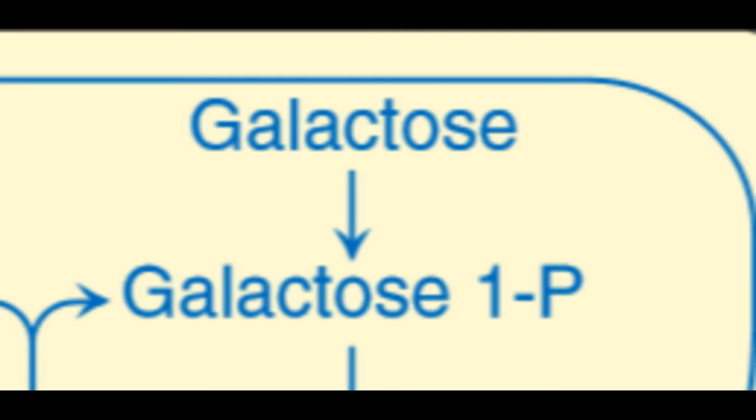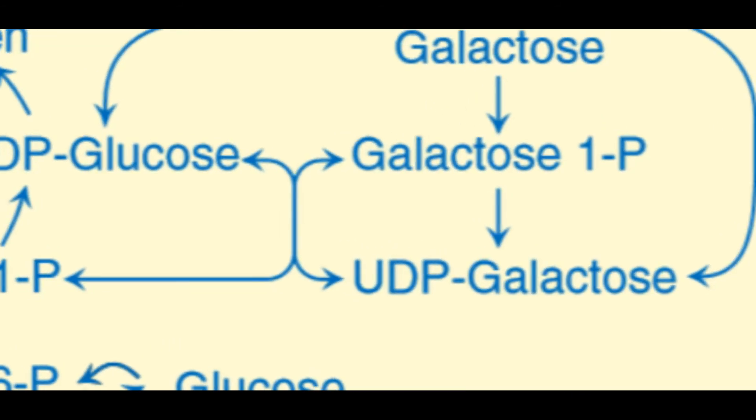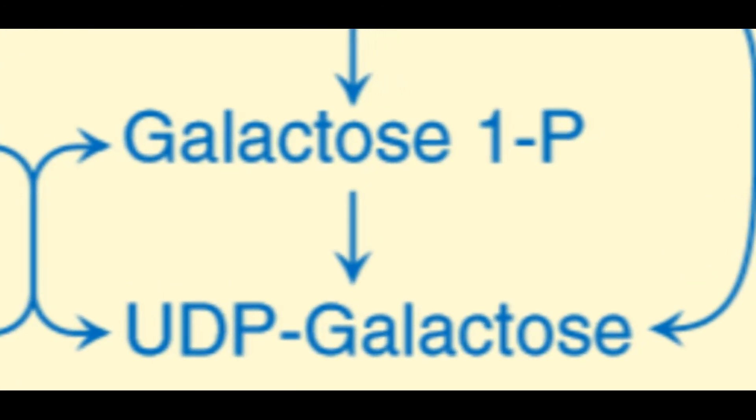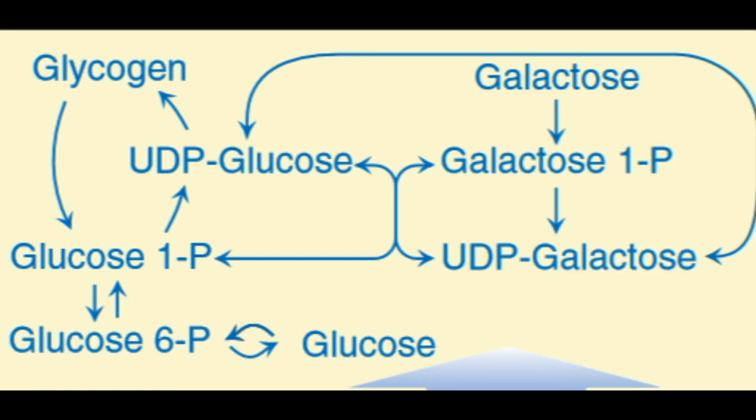It cannot enter the glycolytic pathway unless it is first converted to UDP-galactose. This occurs in an exchange reaction in which UDP-glucose reacts with galactose 1-phosphate, producing UDP-galactose and glucose 1-phosphate. It's an exchange reaction.